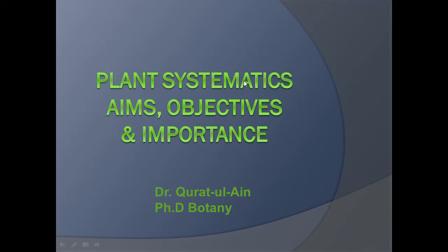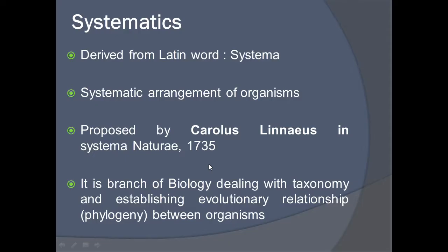Assalamu alaikum friends. In this video we will discuss about plant systematics, its aims, objectives, and importance. The word 'systematic' has been derived from the Latin word 'systema,' and systematic is the systematic arrangement of organisms. The word systematic was proposed by Carolus Linnaeus in his book Systema Naturae in 1735.